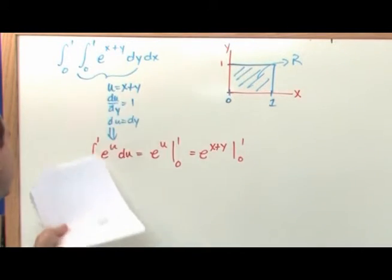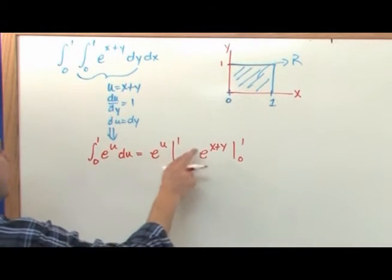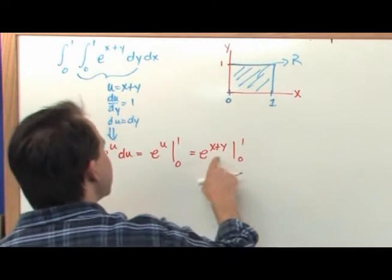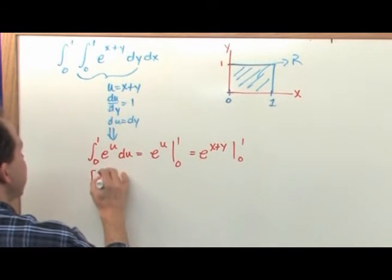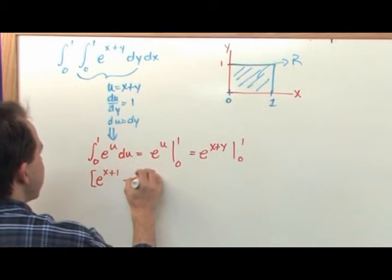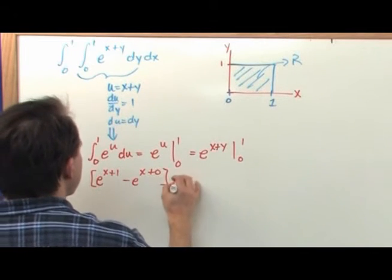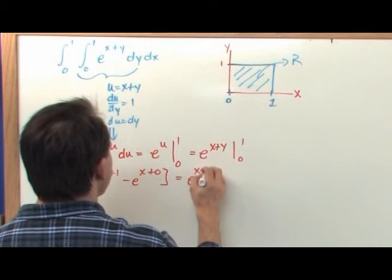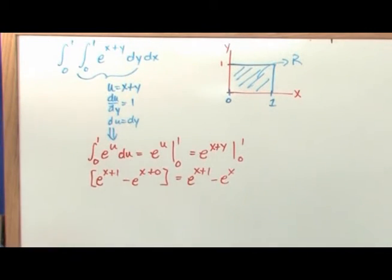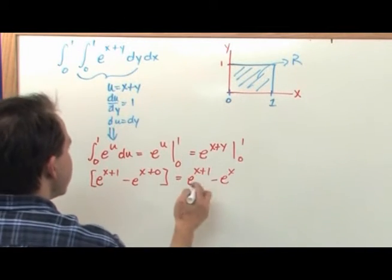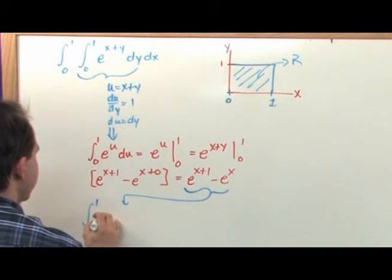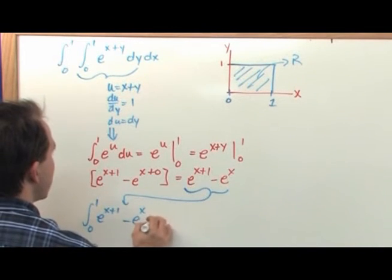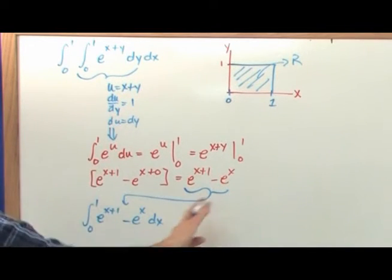Now if you know how to integrate this without the substitution, that's fine. When I plug in the limits of integration, I'm only plugging in for the variable y because that's what I integrated across. Plugging in the top limit gives e^(x+1), and subtracting the bottom gives minus e^(x+0), so the result is e^(x+1) minus e^x. That is the value of the first inner integral, and now I take that result and integrate along dx.